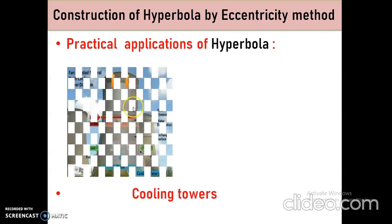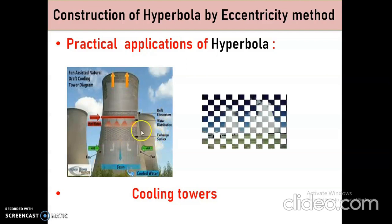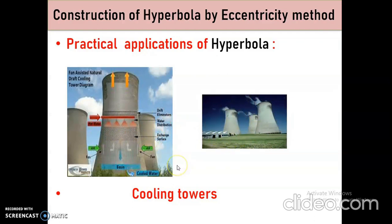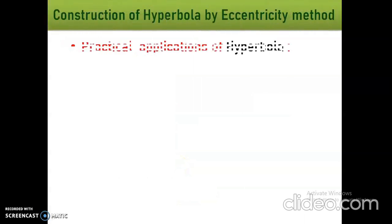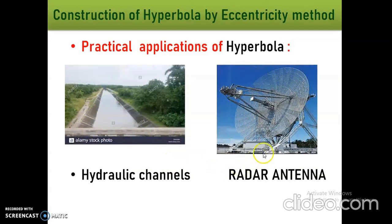Cooling towers — we generally see these towers in thermal power plants. In our Telangana, KTPS is Korthagodam Thermal Power Station. These are the cooling towers. Next, hydraulic channels — this is a hydraulic channel or canal; this shape is also a hyperbola shape. Next, radar antennas — antennas are also a hyperbola shape. These are the practical applications of the hyperbola shape.